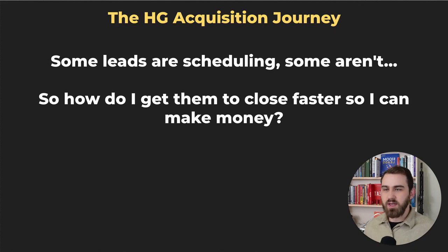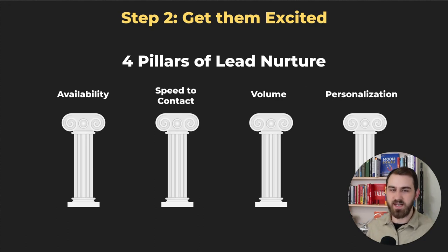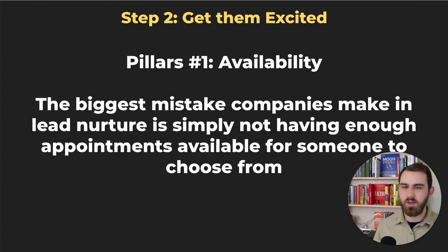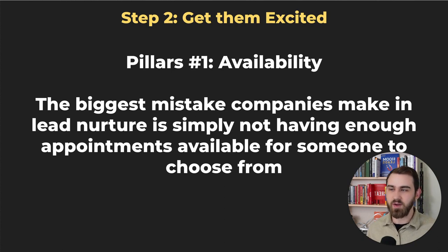Once you launch your ads, you have names, emails, and phone numbers coming in. Some leads are scheduling and some aren't. Here's how to get them to close faster so you can make more money. The four pillars of lead nurture are: availability, speed to contact, volume, and personalization. The biggest pillar is availability, and the biggest mistake companies make is simply not having enough appointment slots to choose from.